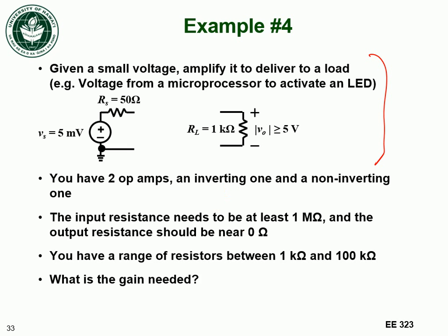This voltage source has a magnitude of five millivolts, but we want the voltage across our load to have a magnitude of at least five volts — it can be opposite in sign, but the magnitude has to be at least five volts. We have some op amps set up as an inverting op amp and a non-inverting op amp, with external resistors constrained between one kilohm and one hundred kilohms.